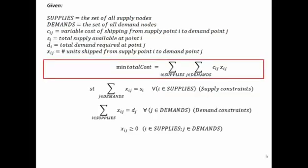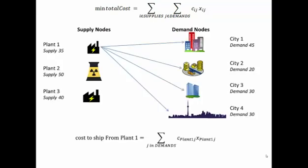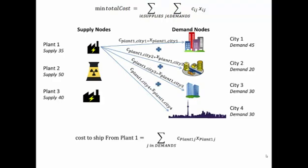Now let's take a look at the objective function. This objective function is basically saying we want to minimize the total cost. The total cost is made up of the cost to ship from plant one, the cost to ship from plant two, and the cost to ship from plant three. For each one of our supply nodes, every time it ships something to a city there's a cost involved — a cost if plant one is shipping to city one, plus a cost for whatever it's shipping to city two, plus a cost for whatever plant one is shipping to city three, plus a cost for whatever plant one is shipping to city four.